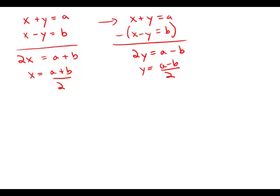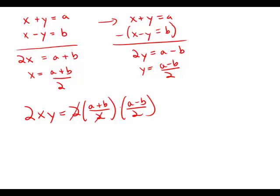So these nice symmetrical equations for x and y. So now we want 2xy, and this is 2 times a plus b over 2 times a minus b over 2. We can cancel the two with one factor of two in the denominator.